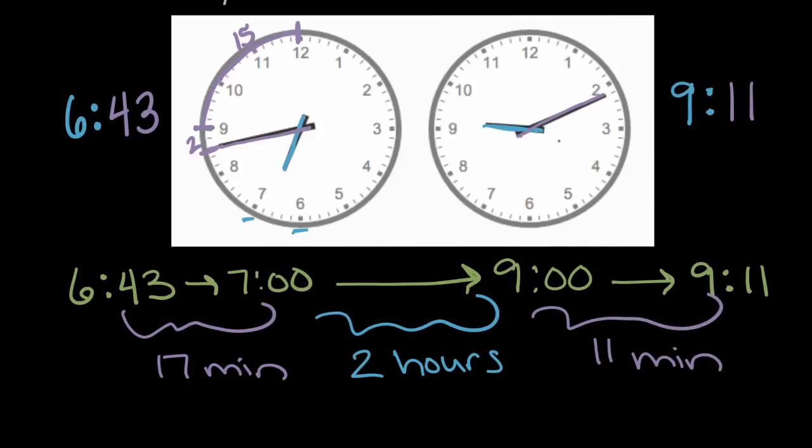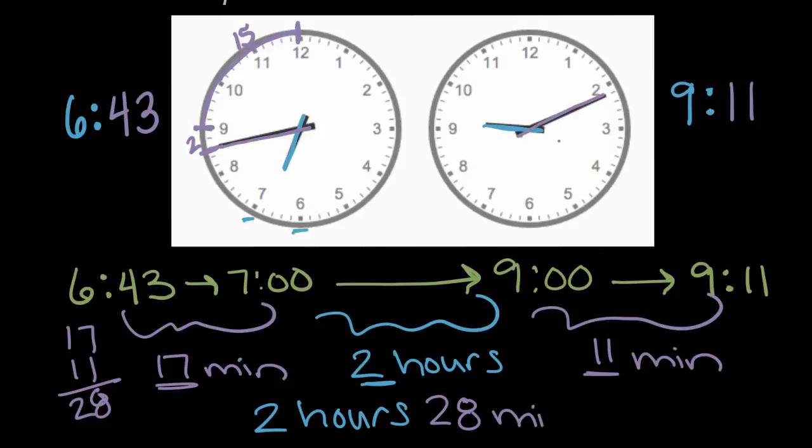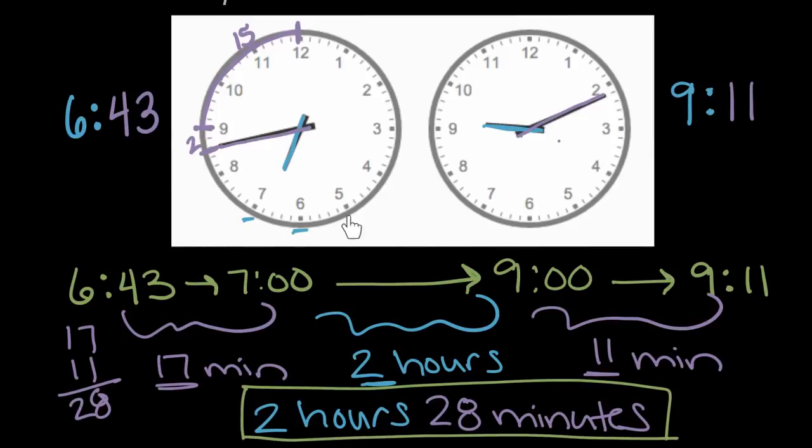So in total, from 6:43 all the way to 9:11 is 17 minutes plus two more hours plus 11 minutes. So we can write that that's gonna be two hours, and then we can combine our minutes, 17 and 11, 17 and 11, that will be eight ones, a 10 and a 10 is 20, so 28 minutes. It takes two hours and 28 minutes for the clock to go from 6:43, this time on the left, until 9:11, the time on the right.